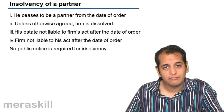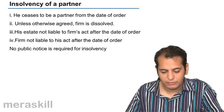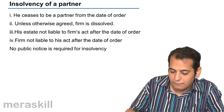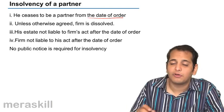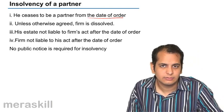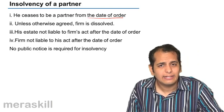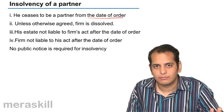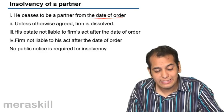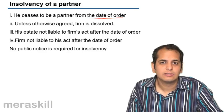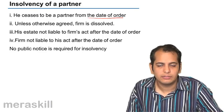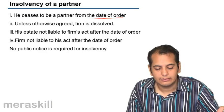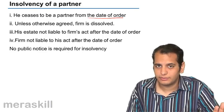When a partner is declared insolvent, he ceases to become a partner from the date of order. The court adjudges a person insolvent, and on the date when he is adjudged insolvent by the court, he ceases to be a partner in the firm.